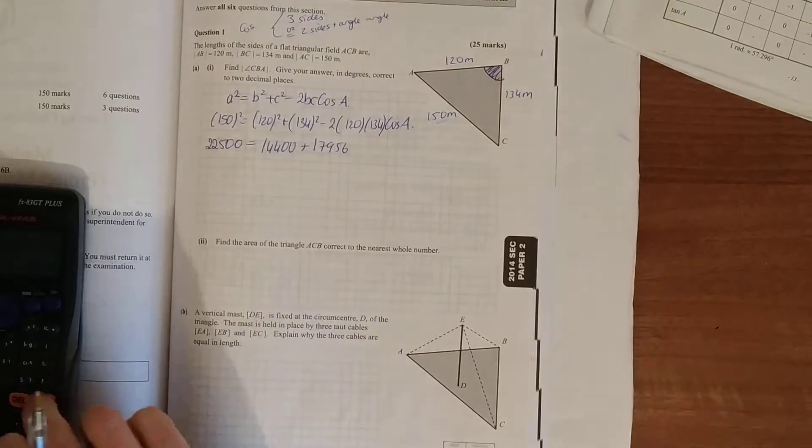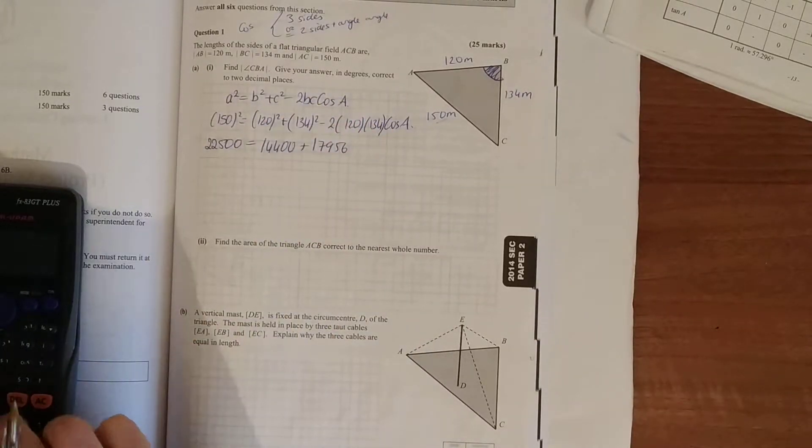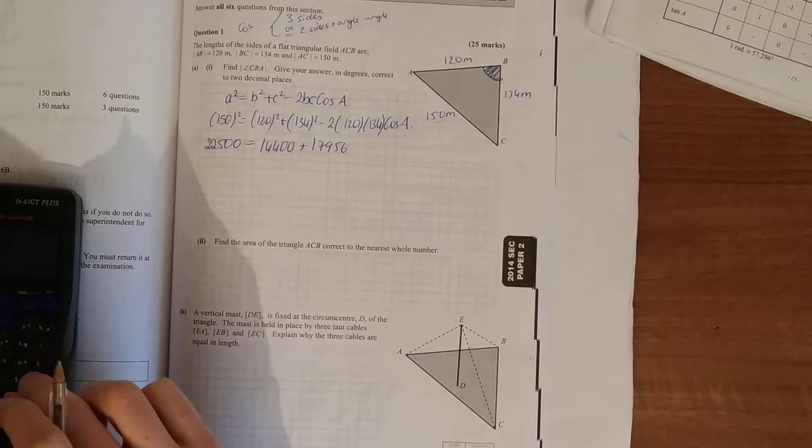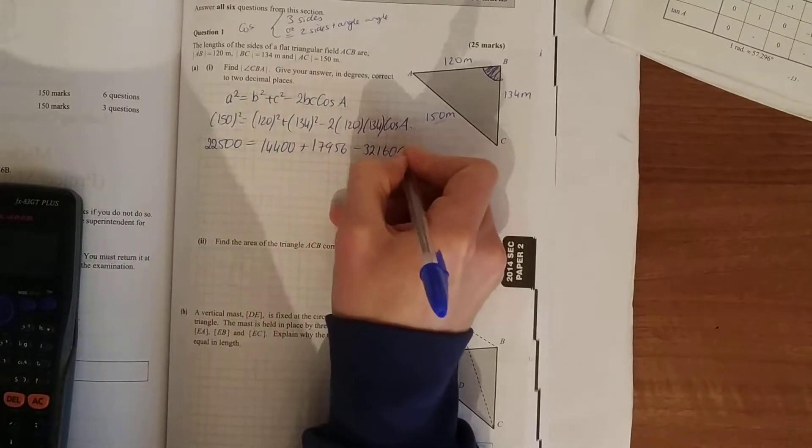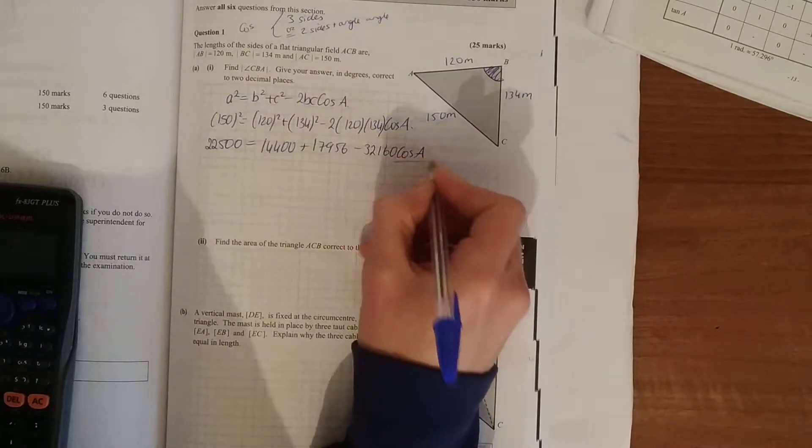Minus two times 120 times 134, so 32,160 cos A, because we want to work out cos A.